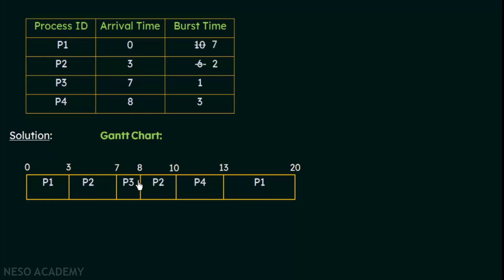P2 executes from 8 to 10 ms and then releases the CPU. The remaining processes are P1 with 7 ms and P4 with 3 ms. P4 has the smaller burst time, so P4 gets the CPU at the 10th millisecond and executes for 3 ms, completing at the 13th millisecond.